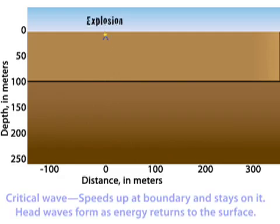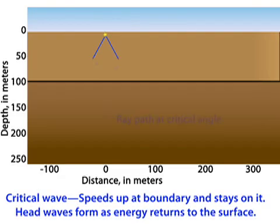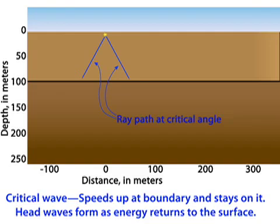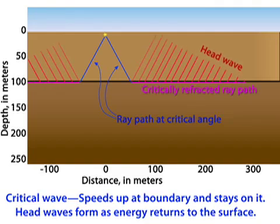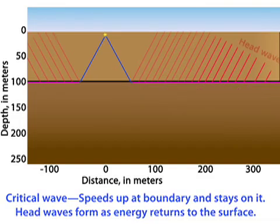The critical angle marks the angle where the wave is refracted parallel to the boundary and travels along the upper surface of the fast layer while sending a series of rays known collectively as the head wave back to the surface at the angle of the initial direct wave.